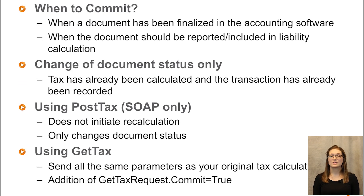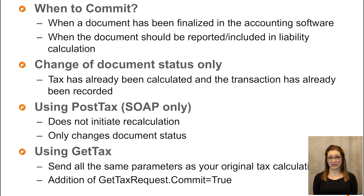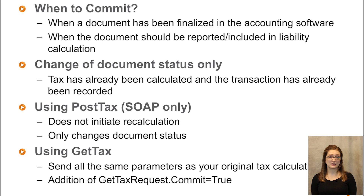Now that we're getting tax, let's talk about recording tax and reporting on it. Committing documents is something you'll want to do when a document has been finalized in your accounting software and should be reported and included in liability calculation. Note that committing documents is a change of document status only — tax has already been calculated and the transaction recorded using that Get Tax request and your document type. You can do this using Post Tax if you're on our SOAP API, which does not initiate a recalculation and only changes document status. Or with either REST or SOAP API, you can use the Get Tax method directly — send all the same parameters as your original calculation and just set your commit property to true.